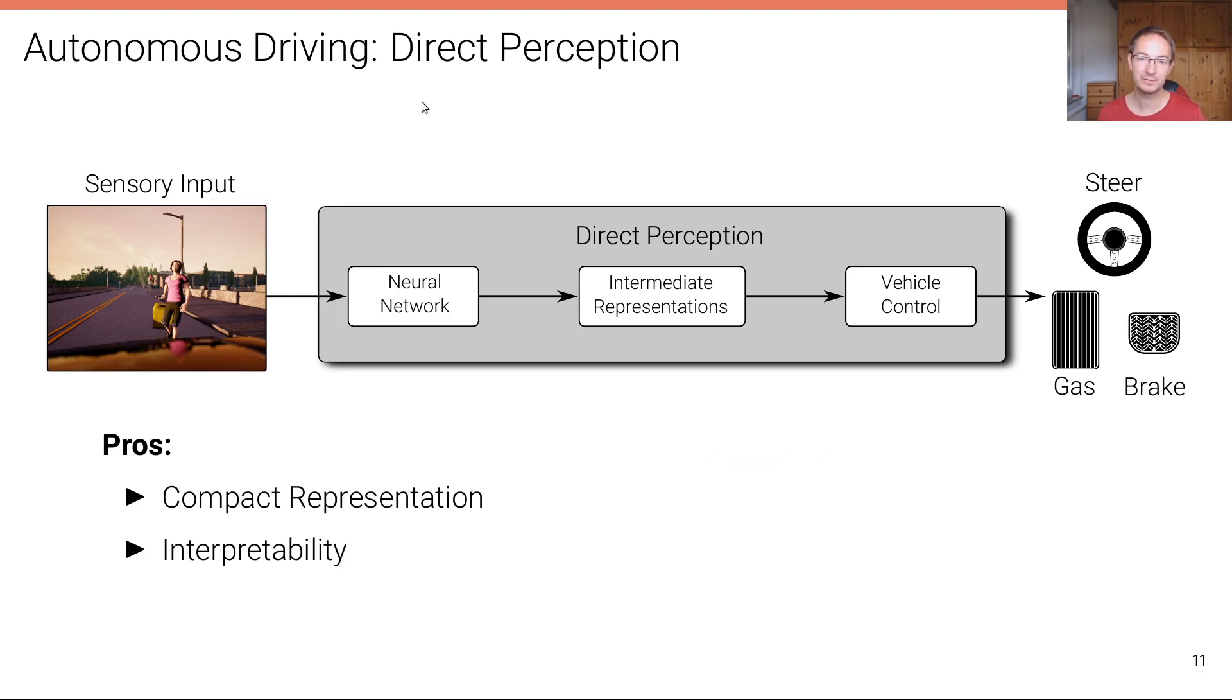The advantages of direct perception are that the intermediate representation can be quite compact and also very interpretable. But on the other hand, it's not always easy to learn the vehicle controller jointly, and it's also not clear how this representation should be chosen, as now we have again a human decision involved in this process.